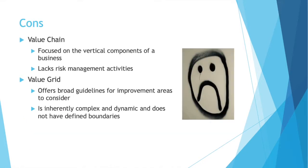What are the cons of each approach? Value chain: it's focused on the vertical components of a business and nothing else, and it lacks risk management activities. What are the negatives of the value grid? It offers broad guidelines for improvement areas to consider — broad guidelines. It's not really as specific as the value chain. The value grid is inherently complex and dynamic and does not have defined boundaries; it was created that way.